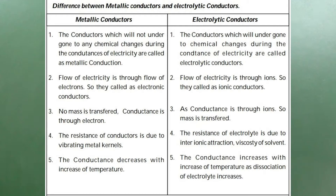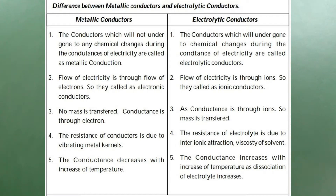Third difference: No mass is transferred during the conductance of electricity through metallic conductors, as the conductance is through electrons. In electrolytic conductors, as the conductance is through ions, mass is transferred from one place to another place — that means masses are deposited or dissolved at the respective electrodes.